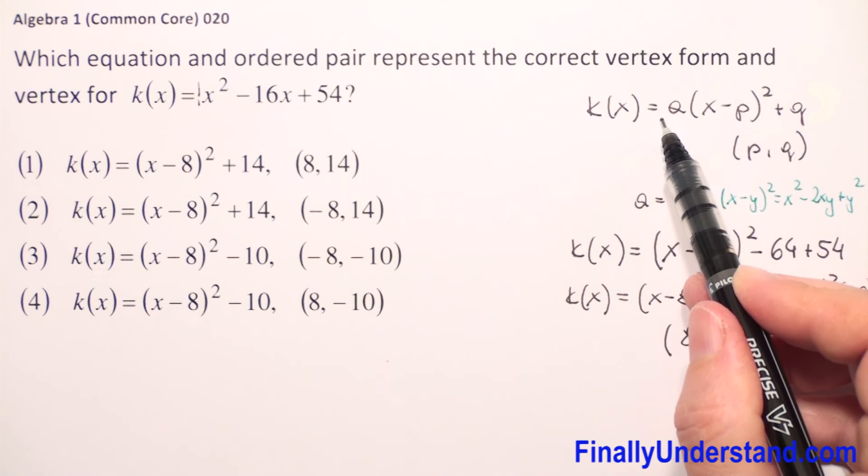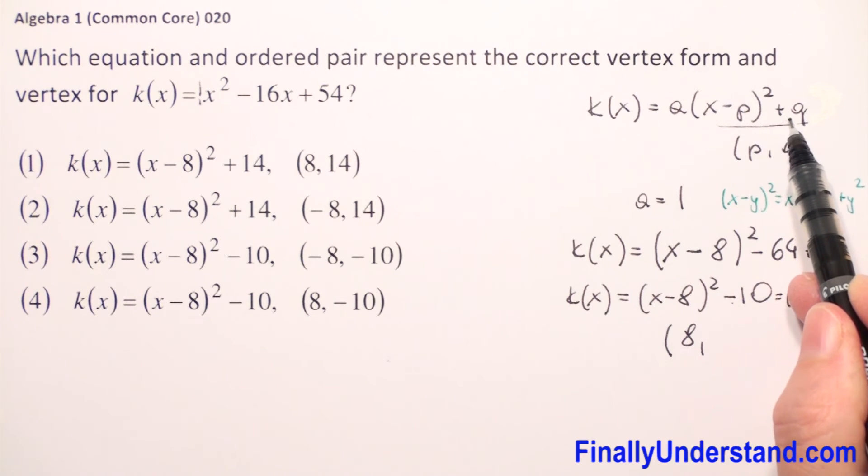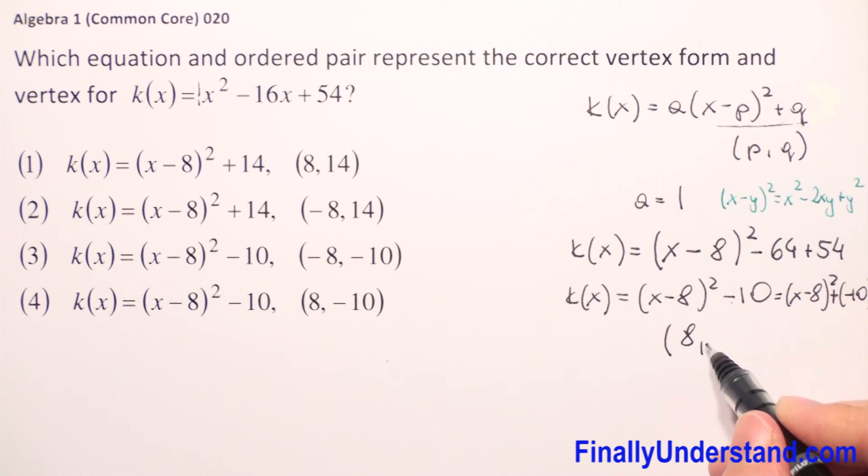And now from vertex form, we see what we have here: plus q. So we have plus negative 10, so the second coordinate of the vertex is negative 10.